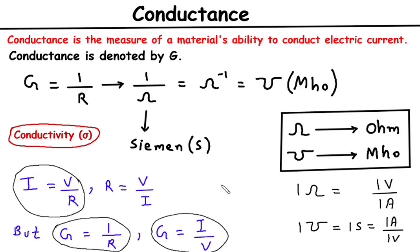When resistors are connected in series, the total conductance is the reciprocal of the sum of the individual resistances. In other words, conductances add up inversely just like resistances add up directly in a series circuit.